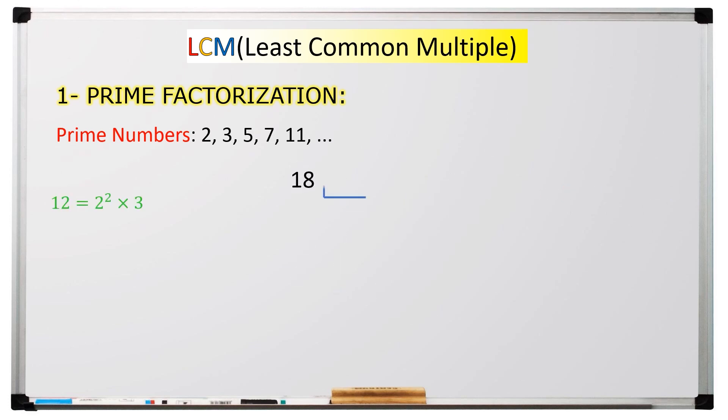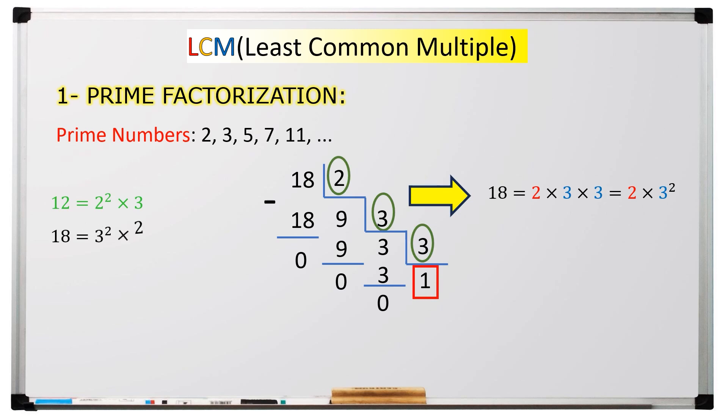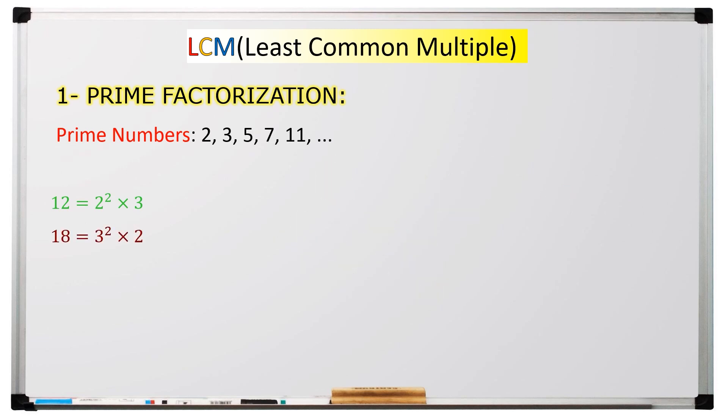Now, for another example. Eighteen divided by two equals nine. Following the pattern to reach one, we can write eighteen as three squared times two. You should continue this pattern for two more examples.